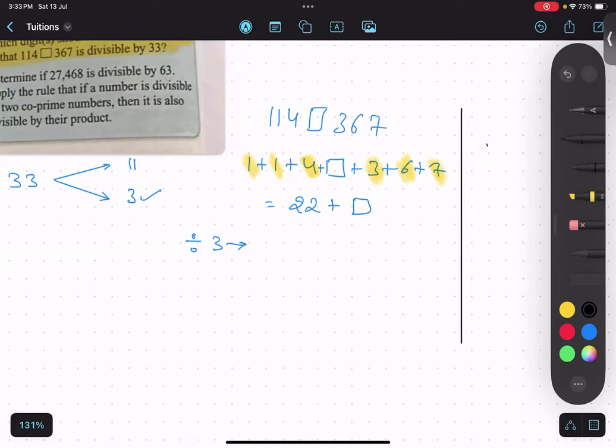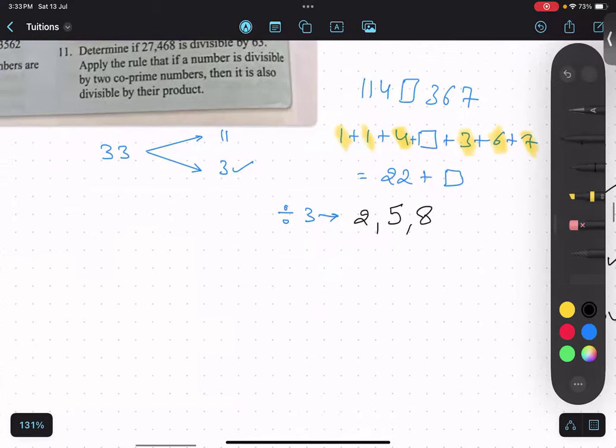Why is it so? Because after 22, 23 is not divisible by 3, 24 is divisible by 3. 22 is not divisible by 3, so 24 comes by 2. 25 is not possible, 26 is not possible, 27 is possible, so 27 will come by 5. 22 plus 5 is 27, after that plus 3 you will get 30. So these 3 are the possible answers.